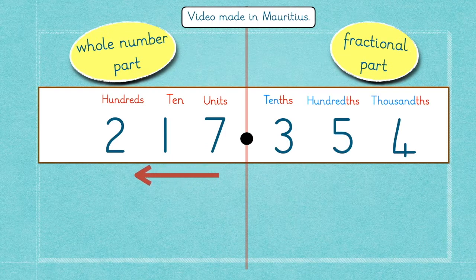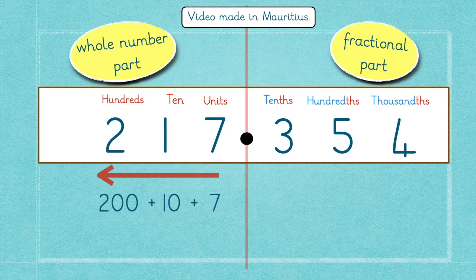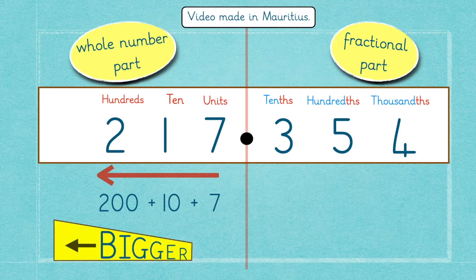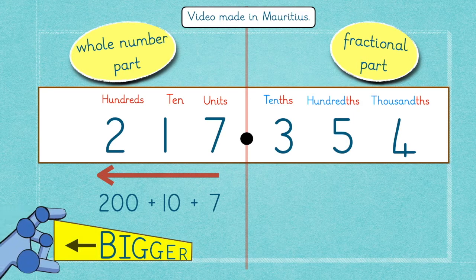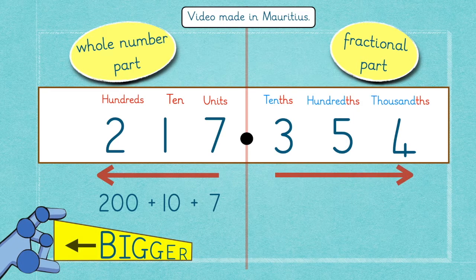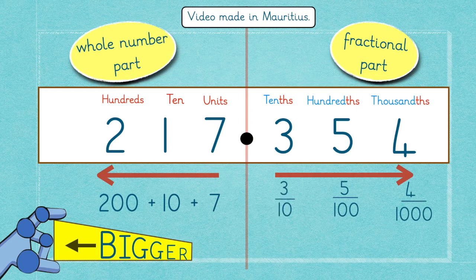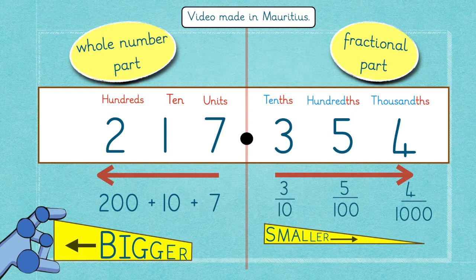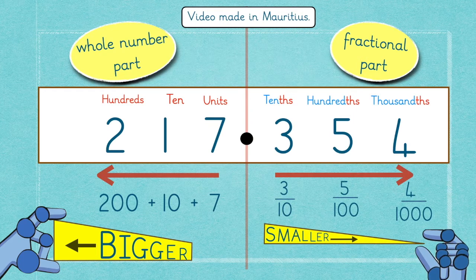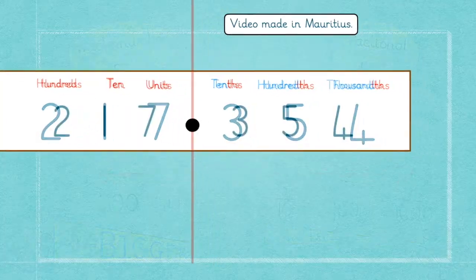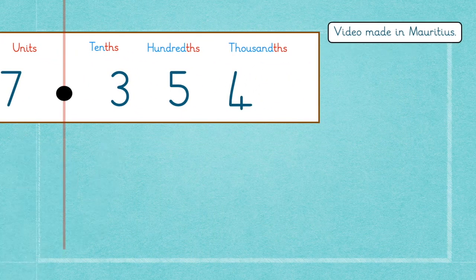As you move to the left from the decimal point, the value of the number grows bigger. On the opposite side, as you move to the right, the fraction becomes smaller. Let's have a closer look at the fractional part.